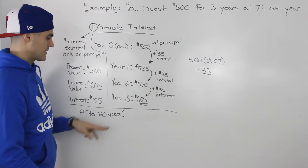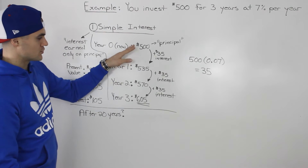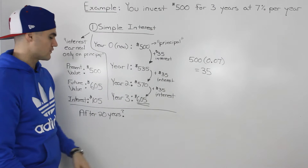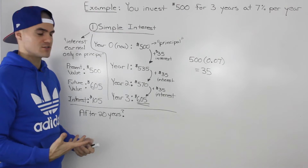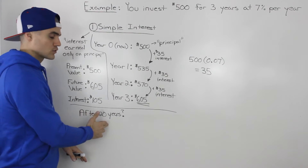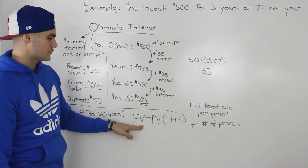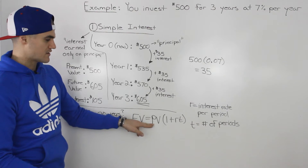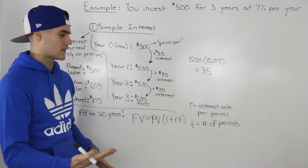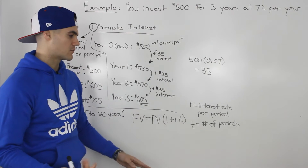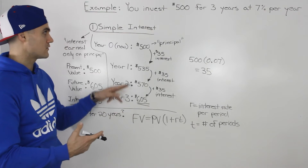Now if I asked how much you'd have at the end of 20 years, it would be a lot of work to keep adding $35 every year. So we can put this into a formula: the future value equals the present value times (1 + RT), where R is the interest rate per period in decimals and T is the number of periods. This formula represents the future value of an investment with simple interest only.